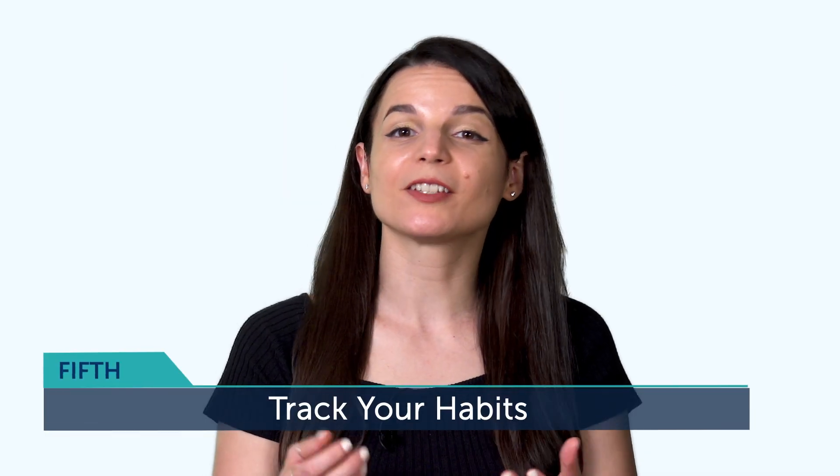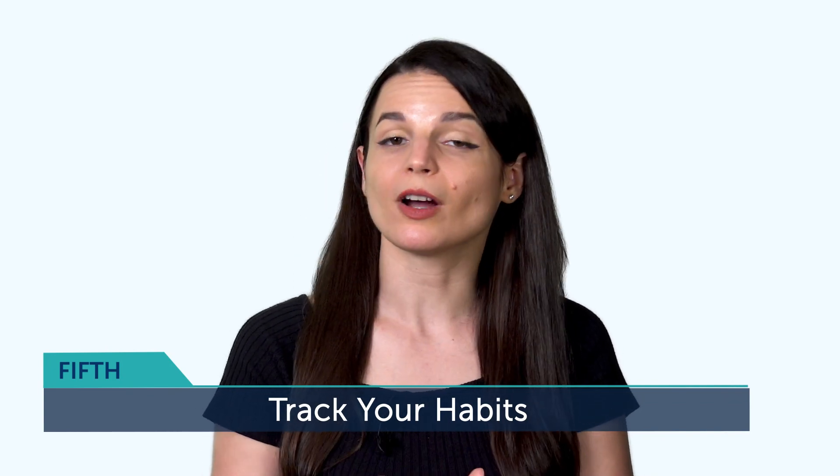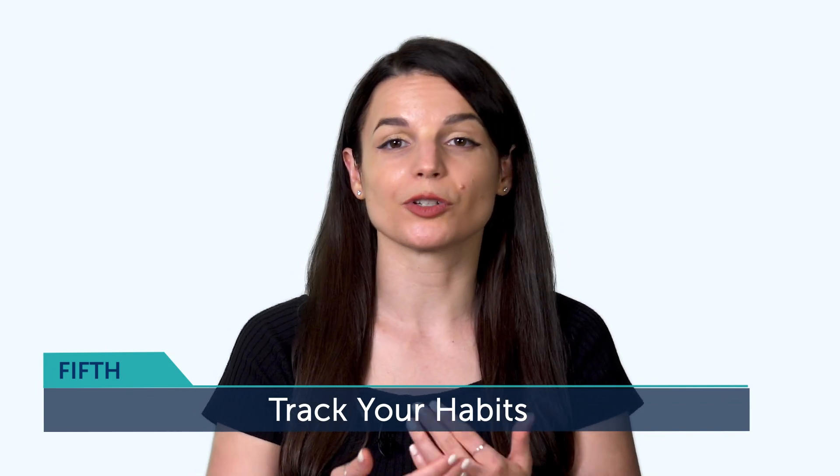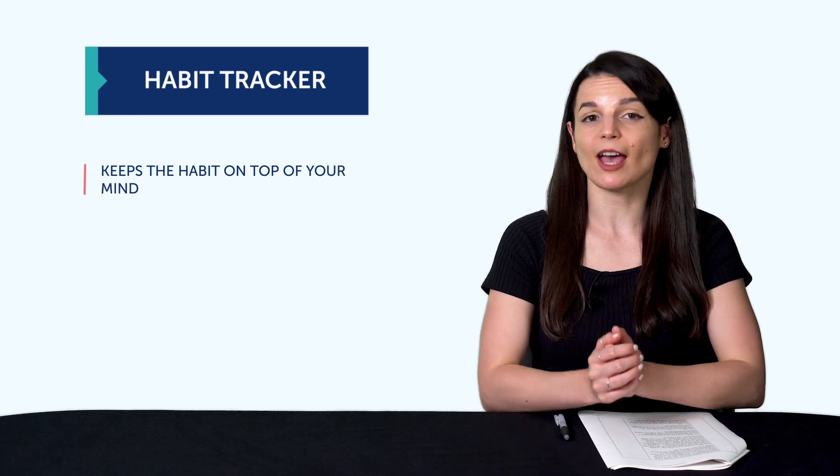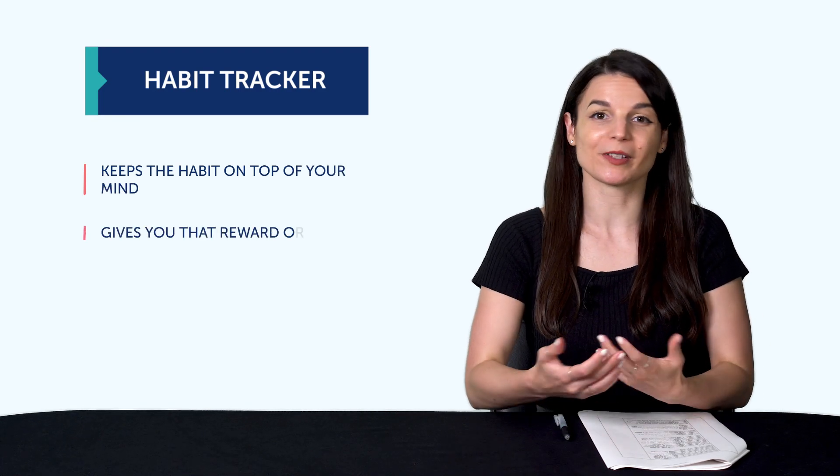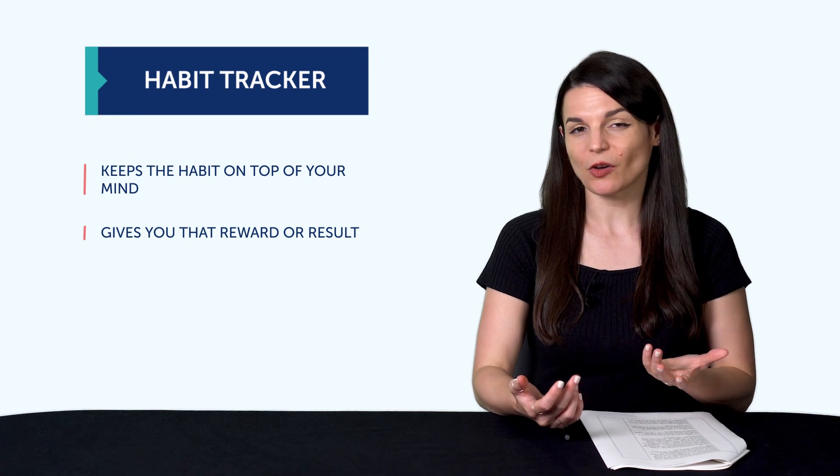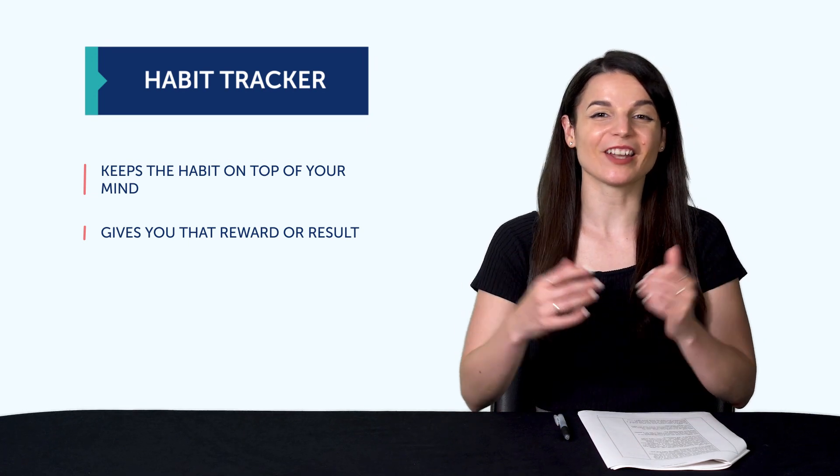The fifth tip is to track your habits. And it's something you can do with a calendar, where you cross the days on a calendar every time you learn your target language. Having that habit tracker does two things. First, it keeps the habit on top of your mind. And second, it gives you that reward or result. So if you're consistent, you have the visual proof right in front of you. If you're not, well, at least now you know your progress.